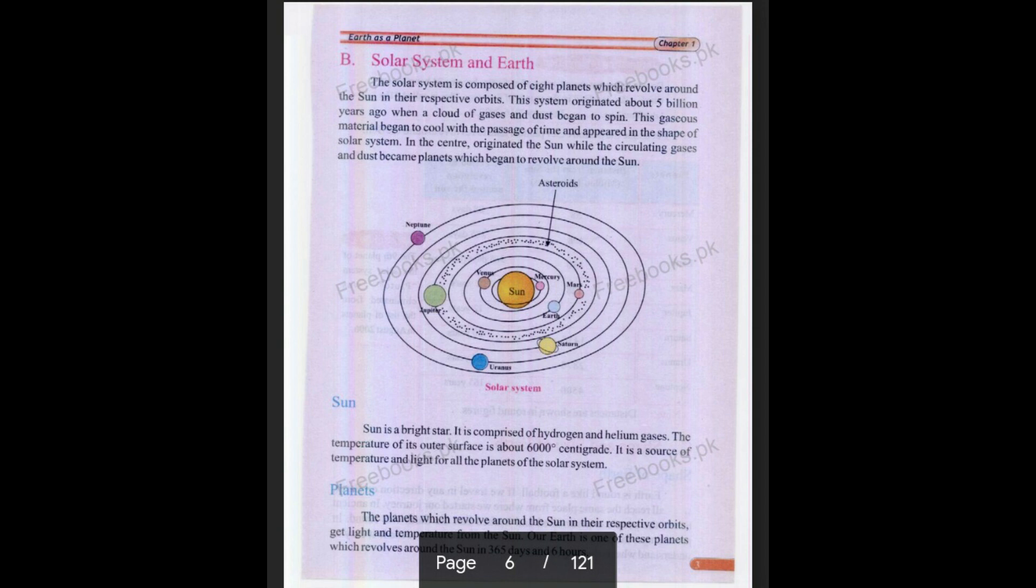Now let's talk about Sun. What is Sun? It is believed that it is a bright star. It is comprised of hydrogen and helium gases. The temperature of its outer surface is about 6000 centigrade. It is the source of temperature and light for all the planets of the solar system. First point: Sun is a bright star. Second, it has a temperature of 6000 centigrade. And it is a source of light and temperature. Imagine when the Sun disappears, what happens at night?